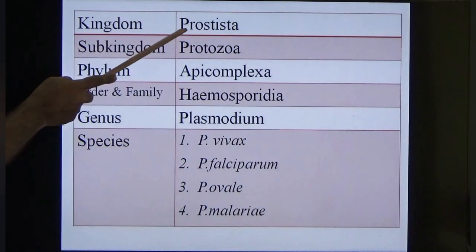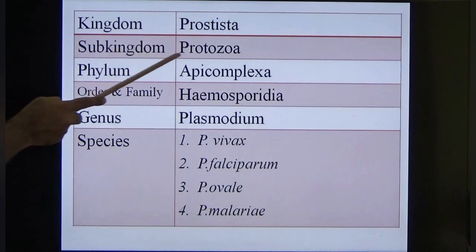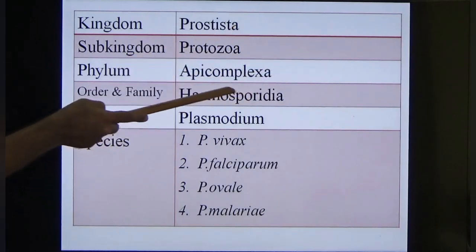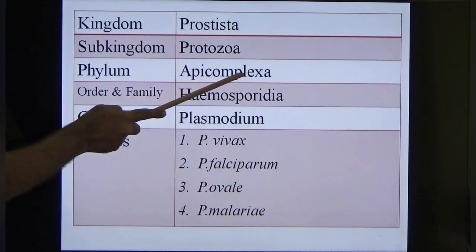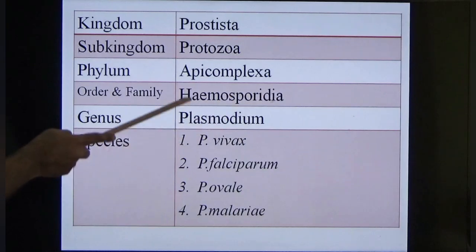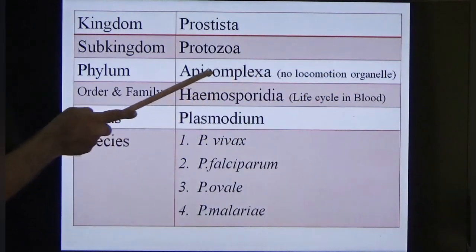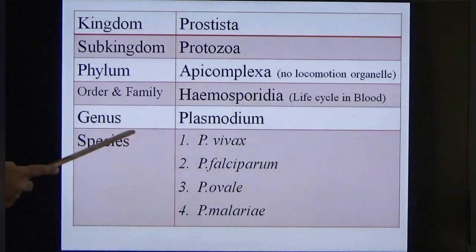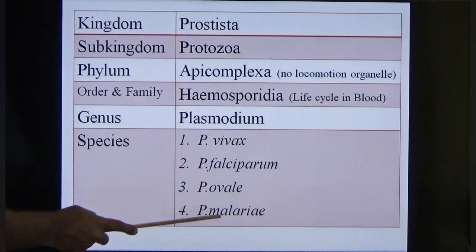Regarding classification: the kingdom is Protista. Parasitology is divided into two sub-kingdoms — protozoa and metazoa (metazoa being worms and helminths). Malaria comes under protozoa. The phylum is Apicomplexa, and order and family is Haemosporida. Apicomplexa refers to the absence of locomotion organelles, and Haemosporida means the life cycle happens in the blood. The genus is Plasmodium, and the four human-specific species are Plasmodium vivax, Plasmodium falciparum, Plasmodium ovale and Plasmodium malariae.